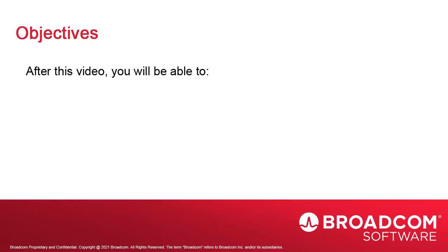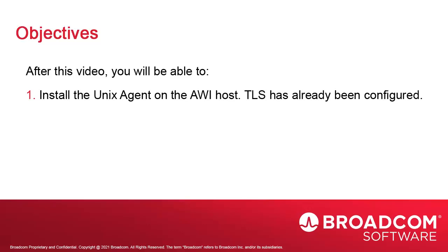We're now installing the Unix agents. This process is similar to Windows. We install an agent on the AWI system. In the real world, this makes absolutely no sense, but the system is already networked and it means we don't have to spin another virtual image. So we're just pretending this is an independent Linux system.